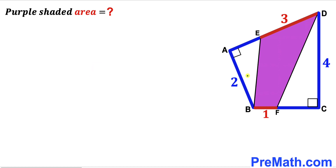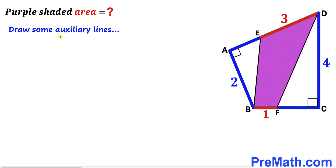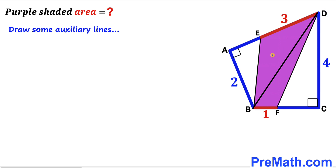Let's go ahead and get started. Since we are interested in calculating the area of this purple shaded quadrilateral, there are many ways to solve this problem. However, we are going to think outside the box and draw some auxiliary lines to make our job easier. I have connected vertices B and D, and as a result we end up with two triangles.